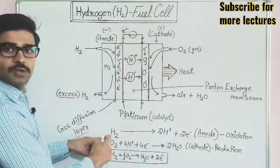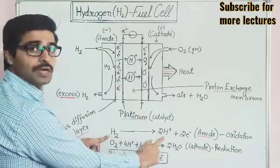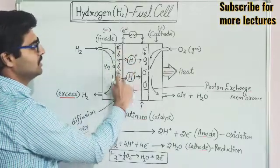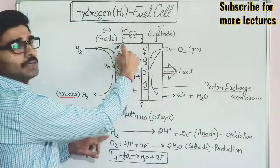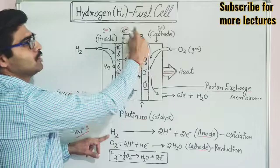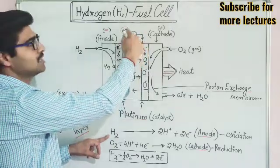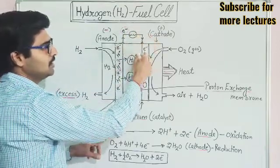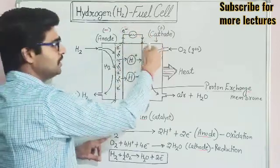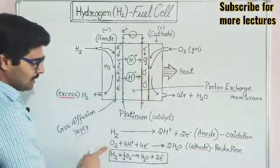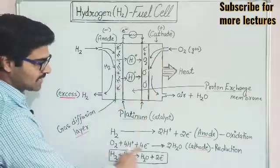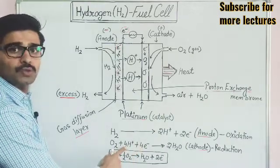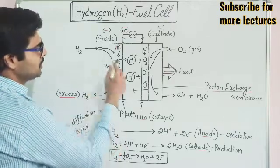The hydrogen gets dissociated into protons and electrons. The reaction at the anode is the dissociation of hydrogen gas (H₂) into hydrogen ions (H⁺) and two electrons (2e⁻). These two electrons are collected by the anode and pass through the external electrical circuit, delivering electrical energy. From the circuit, the electrons go to the cathode.